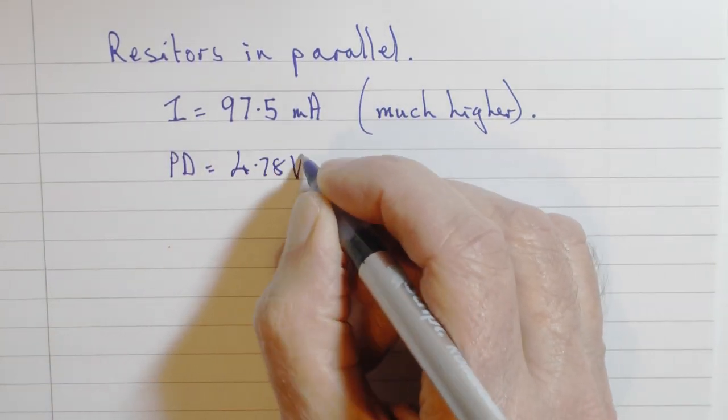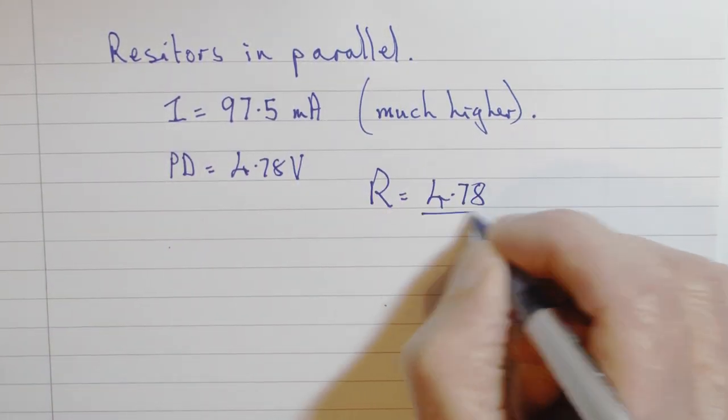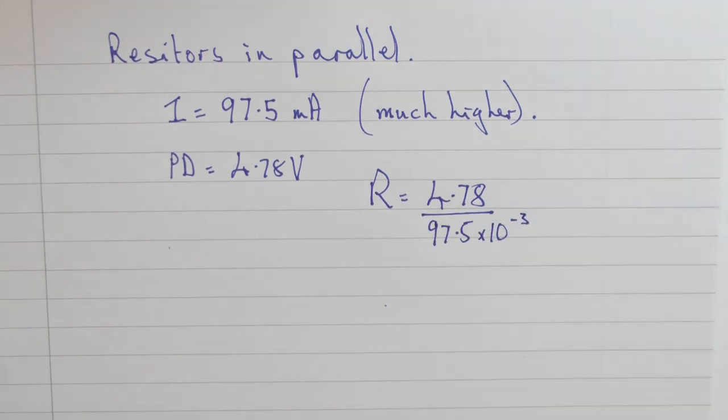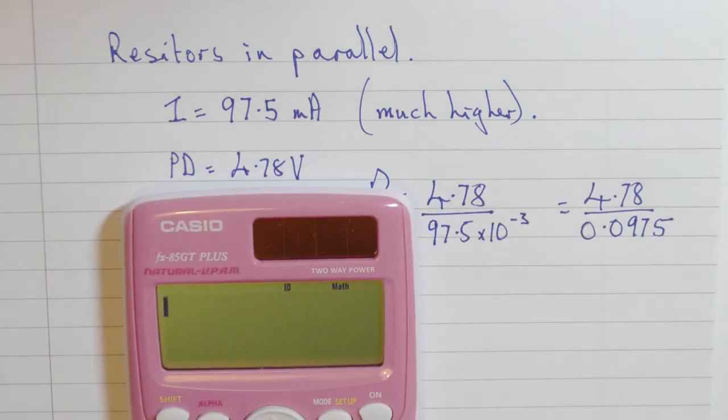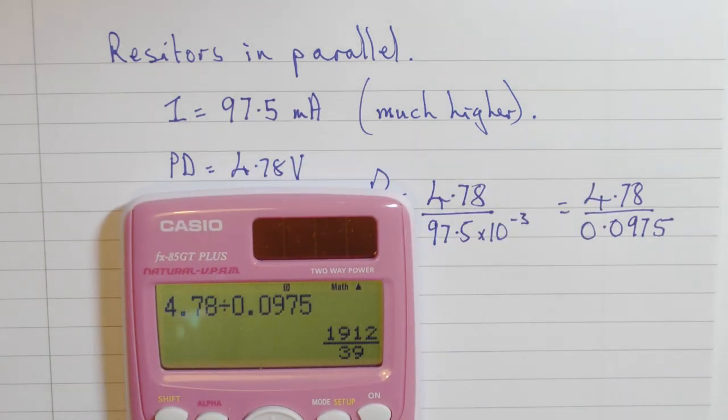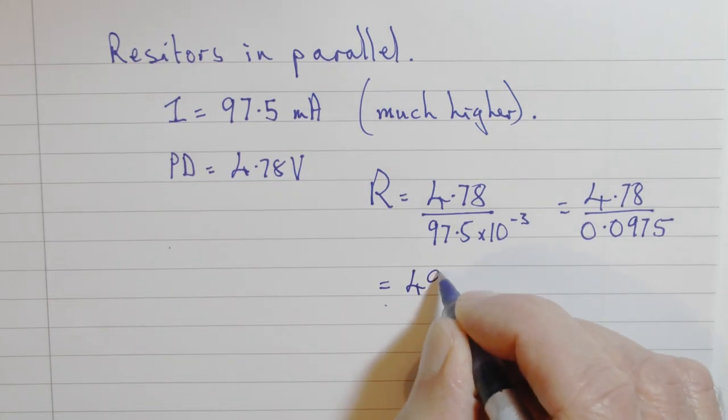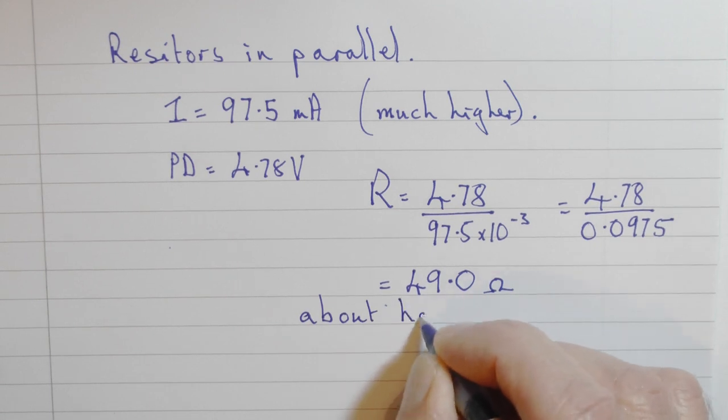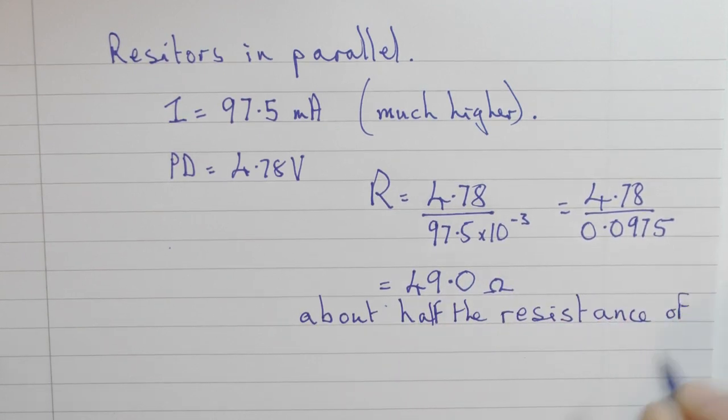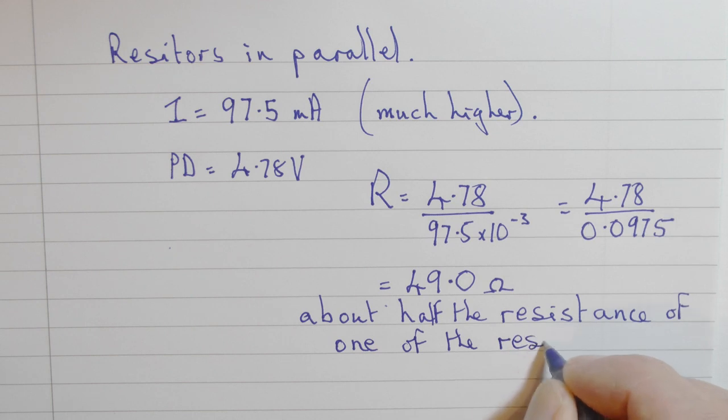So working through the results, potential difference divided by current, that's 4.78 divided by 0.0975. Calculate that through. And to three significant figures, that is 49 ohms exactly. That's about half of the resistance of one of the individual resistors.